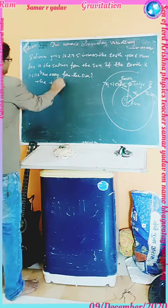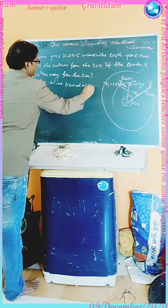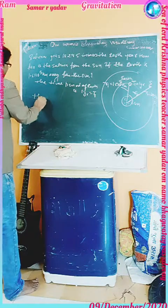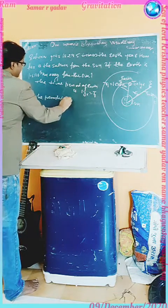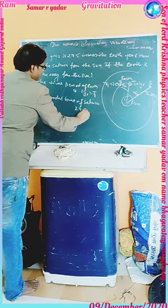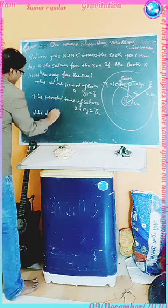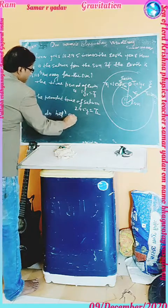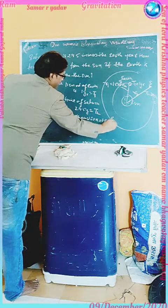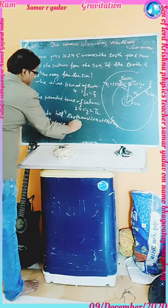The time period of Earth is T1 = 1 year. The periodic time of Saturn is T2 = 29.5 years. The distance between Earth and Sun is R1 = 1.5 × 10⁸ km. We need to find the distance between the Sun and Saturn, R2.